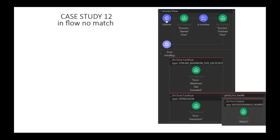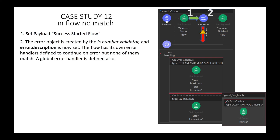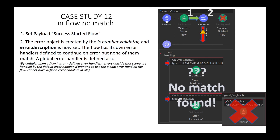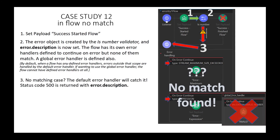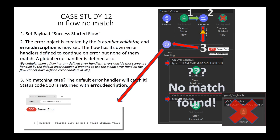Case Study 12: no matches in the flow or global handler. What information would be returned? Step 1, we set the payload. Step 2, the validator fails. Step 3, in this flow diagram there are multiple error handlers, and even a global error handler, but none of the types are matched, so the Mule default error handler kicks in and the exception is responded to using an OnErrorPropagate strategy — status code 500 is returned with the error message 'SUCCESS STARTEDFLOW is not a valid integer value.'